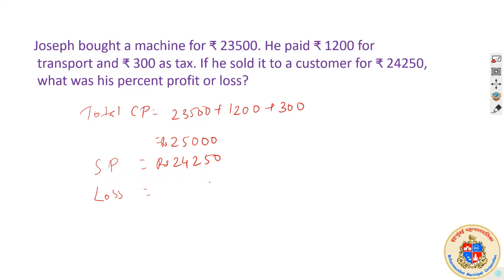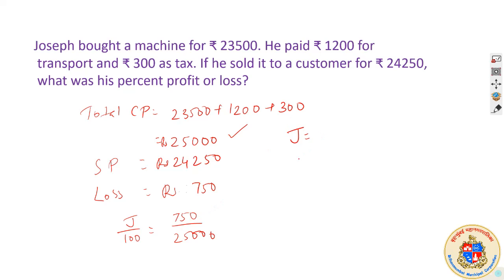The loss is equal to the difference. Difference is Rs. 750. His investment was Rs. 25,000. So the percent of loss J out of 100: J is equal to 750 into 100 upon 25,000. Cancel this by 10s — it's easily cancelable. 3% is his loss.